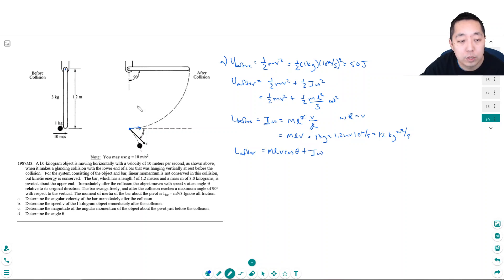But this I is the rotational inertia of the rod, which is 1 third ML squared. Right? So this is equal to ML V cosine theta plus 1 third ML squared omega. Okay. So let's set this equation. So we know that this is equal to 12. And we know that all of this is equal to 50.